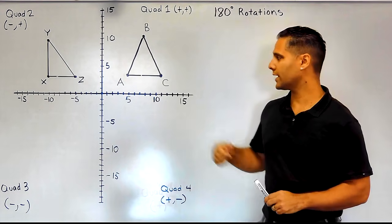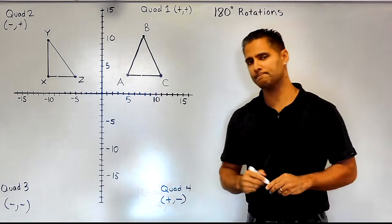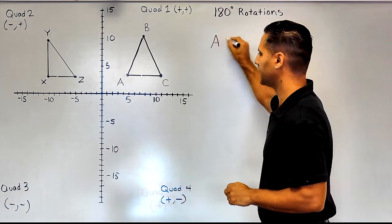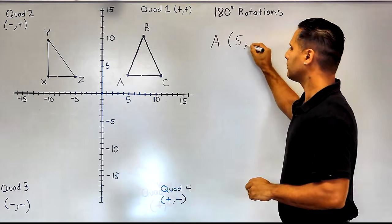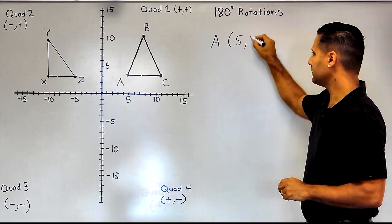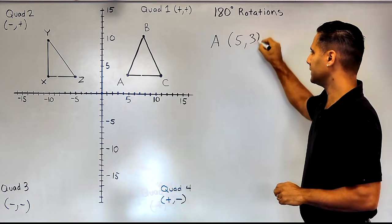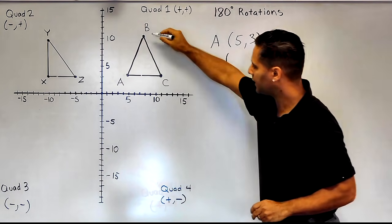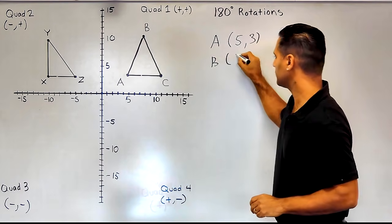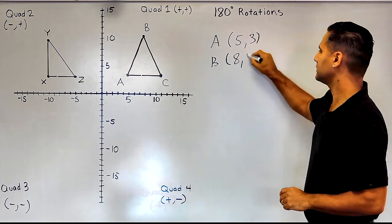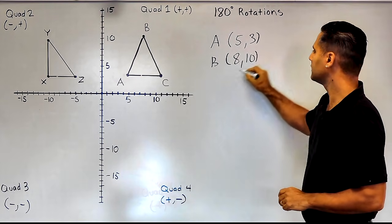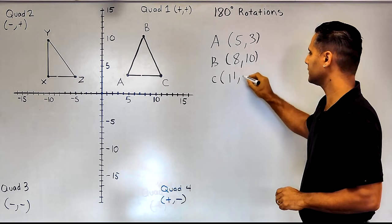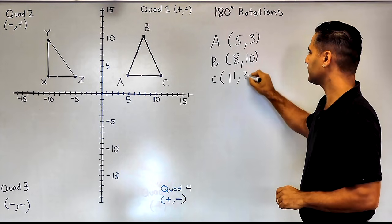Let's start with triangle ABC. Point A is currently located at positive 5, positive 3. Point B is currently located at positive 8, positive 10. Point C is currently located at positive 11 and positive 3.